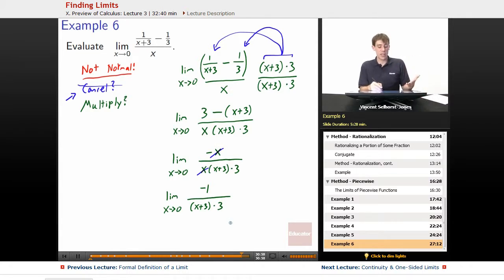Now we ask ourselves, now that we've managed to cancel something, if we were to plug in a number, would we have something weird happen? Would it be normal now? If we plug in 0, we get negative 1 over 0 plus 3 times 3. Hey, it doesn't look like we're going to be having dividing by 0 issues anymore. It isn't weird anymore, so we can just plug in.